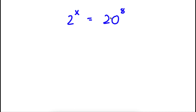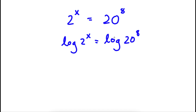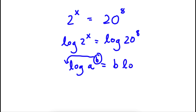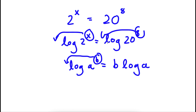Alright, so I have 2 to the power of x is equal to 20 to the power of 8. The first thing I'm going to do is take the log on both sides. So now I have log of 2 to the power of x is equal to log of 20 to the power of 8. An important property of logarithms is that log of a to the power of b equals b times log a — I can move the exponent to the front. So I have x times log 2 is equal to 8 times log 20.